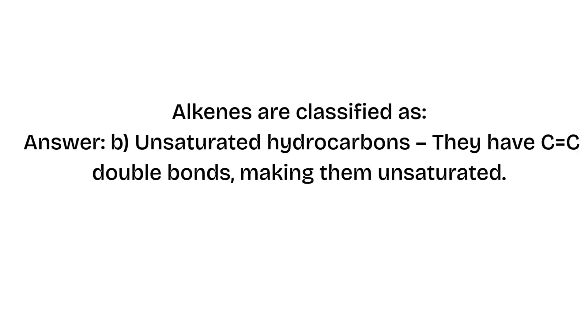Alkenes are classified as? Answer: B — Unsaturated hydrocarbons. They have C=C double bonds, making them unsaturated.